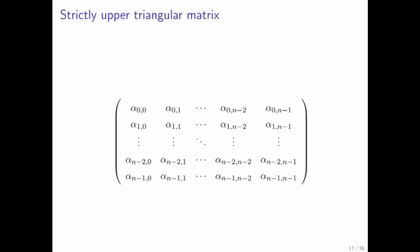There's also a thing called a strictly upper triangular matrix. What is that? Well, if you look at all of the entries on or below the diagonal, those entries right there, all of those are equal to zero.